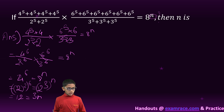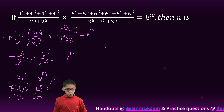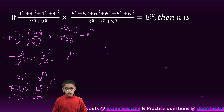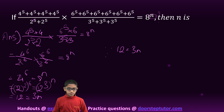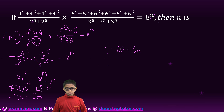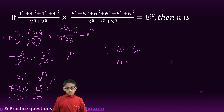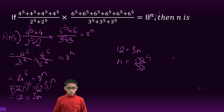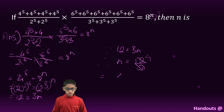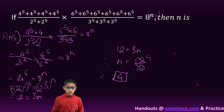Since 12 is equal to 3n, therefore n is equal to 12 upon 3, which equals 4. Therefore, n is equal to 4.